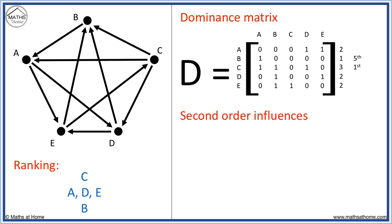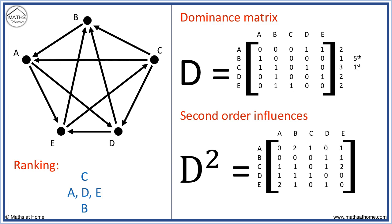These can easily be calculated by finding the D squared matrix on the calculator. Simply enter the D matrix of 1s and 0s and square it. This matrix tells us the number of times a player beat a player who beat another.